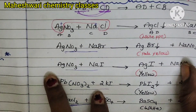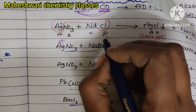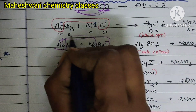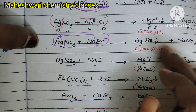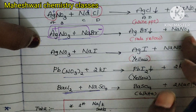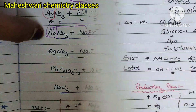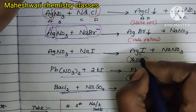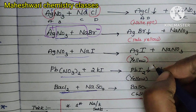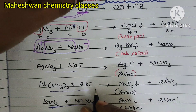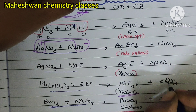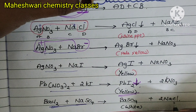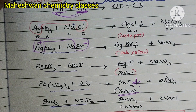Silver always has cationic nature — a positive charge. Halogens always have a negative charge. Silver combines with the halogen atom, so silver halides are eliminated. The remaining sodium reacts with nitrate. This is one of the best examples of chemical double displacement reactions. Silver chloride is white precipitate, silver bromide is pale yellow, and silver iodide is yellow. Lead nitrate reacts with potassium iodide, giving lead iodide as a pale yellow precipitate and potassium nitrate. Barium chloride reacts with sodium sulfate, giving barium sulfate and sodium chloride.